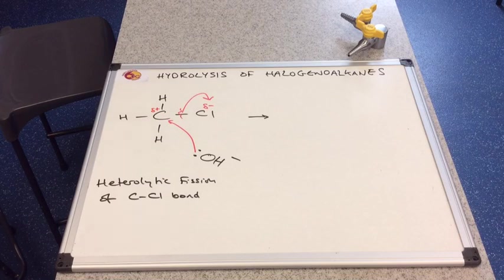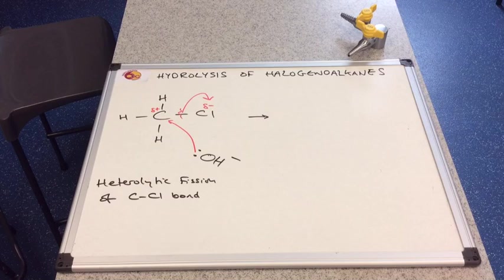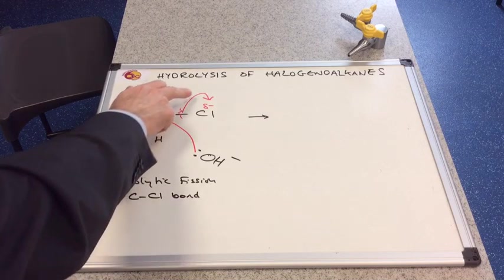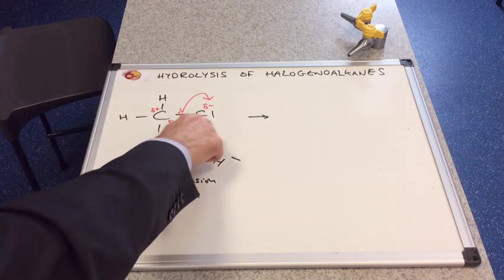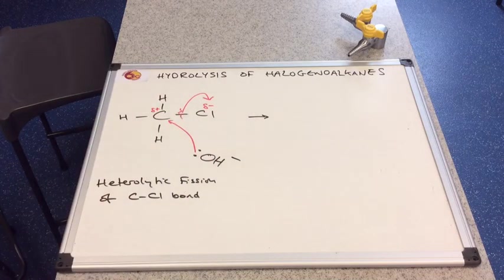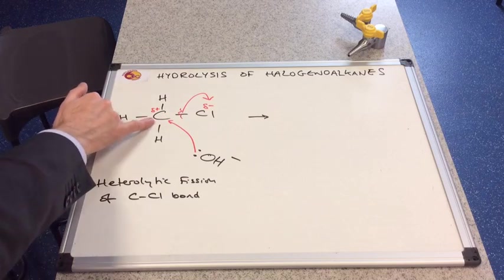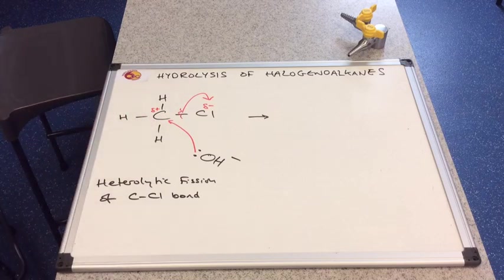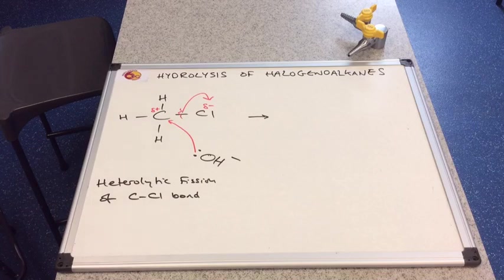Now we've seen this before in the electrophilic addition mechanism with alkenes, where the bond's broken in such a way that this atom here has actually received both of the electrons from the bond, and this atom here, the carbon, receives none from the bond. And we call that heterolytic fission.